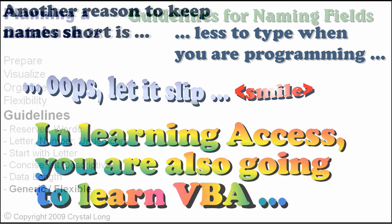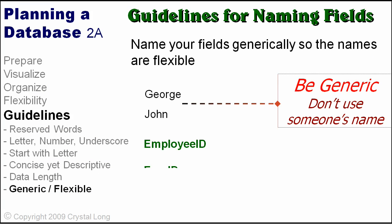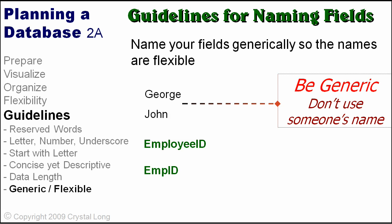Name your fields generically so the names are flexible. Don't use someone's name as a field name. If you are keeping track of who an account belongs to, store employees in a separate table and link on employee ID. What happens if you hire more people? You would have to add more fields, and it would also be a lot harder to report your data.